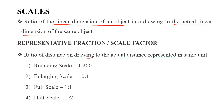There are different types of scales. The first is the reduction scale, for example 1:200. The next is the enlarging scale, for example 10:1. The half scale represents 1:2.